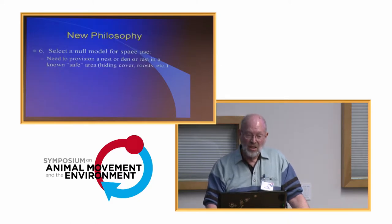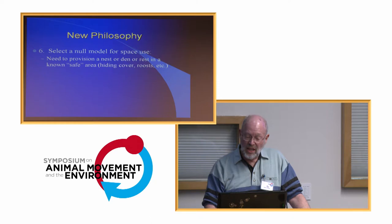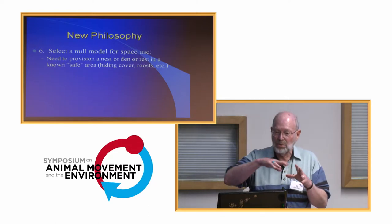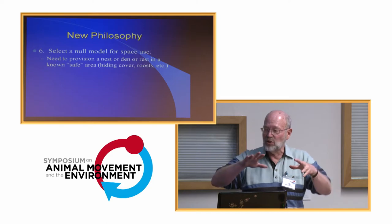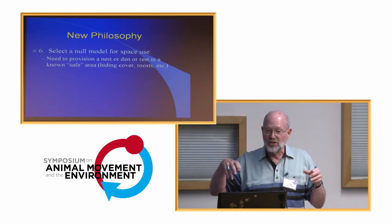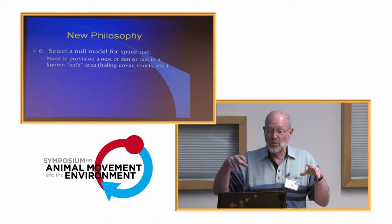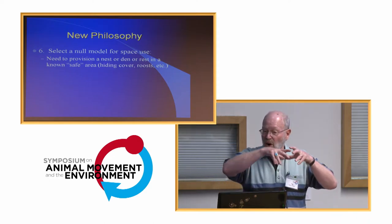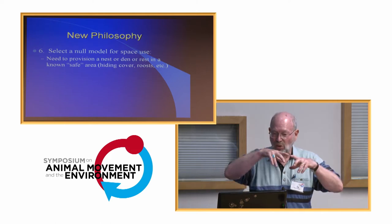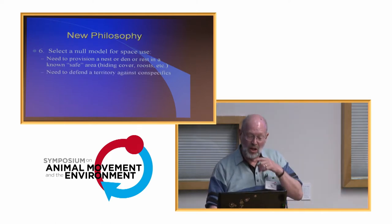Step six: select the null model of space use. If animals need to provision a nest or den or rest in a known safe area, we'd expect random movement out away from that — there's theory predicting that would follow a circular normal or bivariate squashed normal distribution. Those would be reasonable null models. What about rhinos defending a territory? We'd expect a sort of flat-topped distribution rather than a central-point distribution.